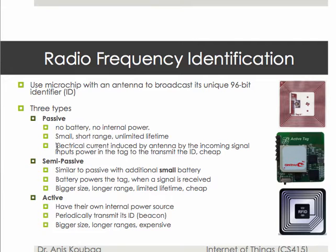Passive tags emit the identifier based on the electrical current induced by the antenna. The antenna broadcasts the identifier as soon as the incoming signal from an RFID reader powers the tag. When you put a passive RFID tag close to an RFID reader, the reader sends an electromagnetic signal which powers the tag and it transmits back its ID. Passive RFID tags are the cheapest in the market, costing $1 or less.